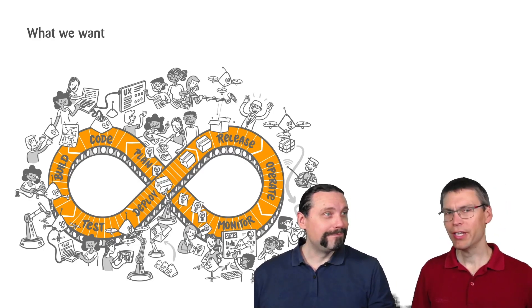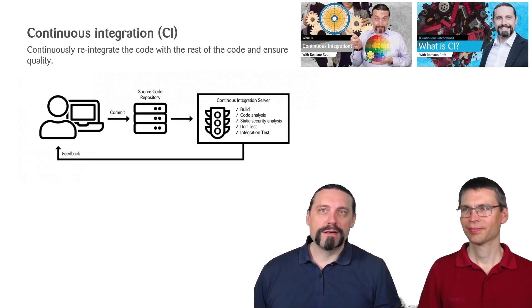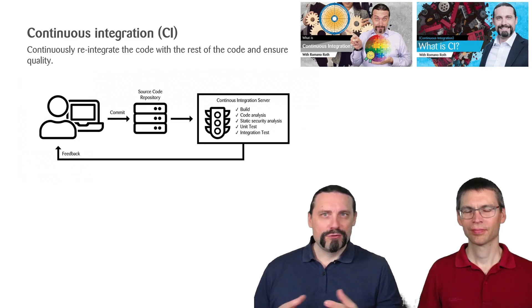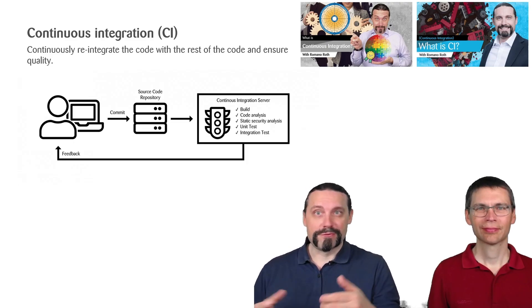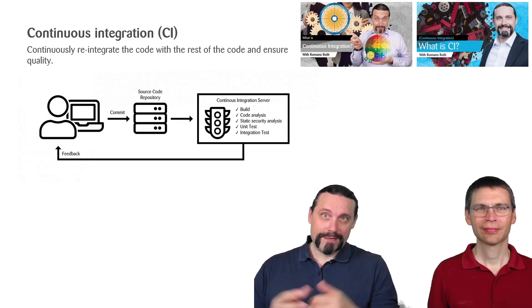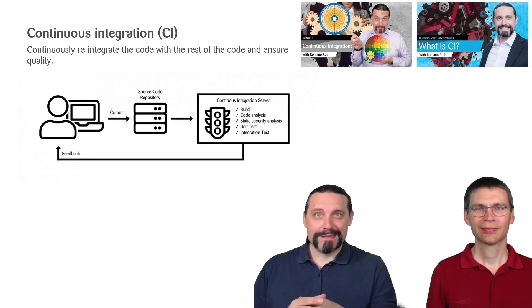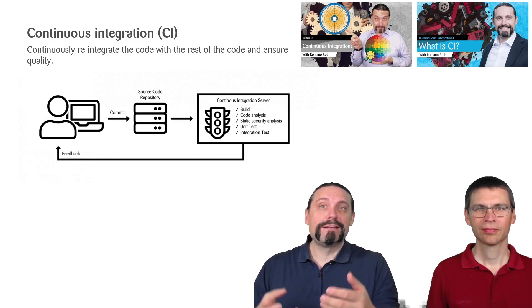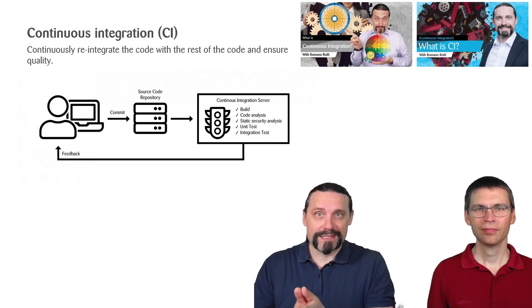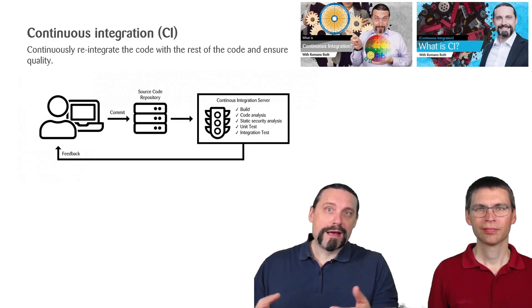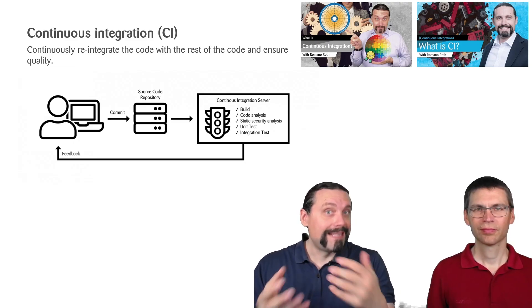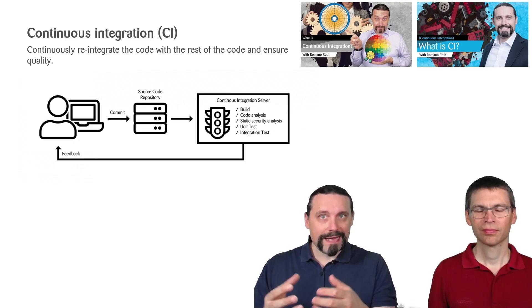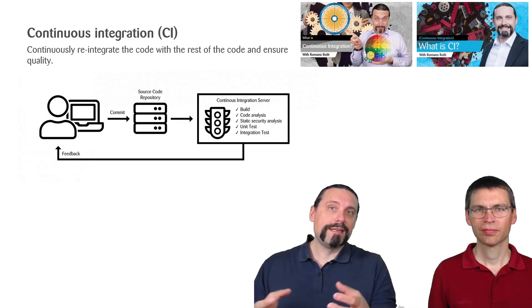That sounds interesting. Can you elaborate on that, please? Sure. So first of all, we need to clarify some terms. When we talk about CI, this is continuous integration. The developer writes code on her or his machine. After that, he or she commits the code to the source code repository. The code needs to be reintegrated with the rest of the code — that's why we call this step continuous integration. This means we need to do a build, code analysis, static security analysis, and execute unit tests and some integration tests. The outcome of the continuous integration build is a deployable artifact.